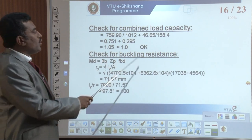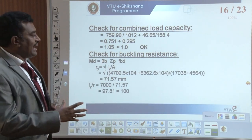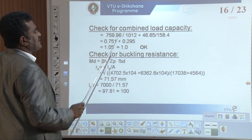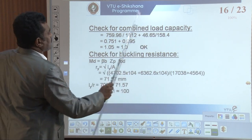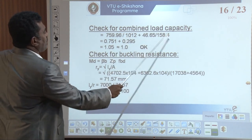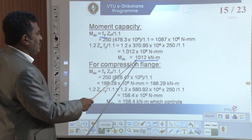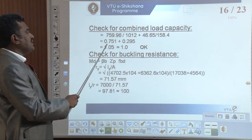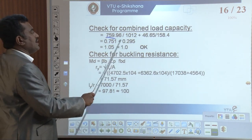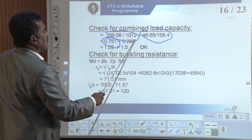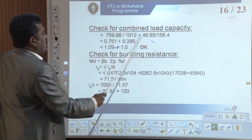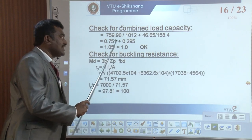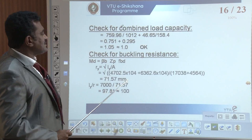Then check for combined loading capacity — for combination of MC and WB. In that: the carrying capacity of shear is 759.96, then 46.65. Here 158.4 is the bending capacity. We get 0.751 plus 0.295, giving a value of approximately 1.05, which is nearly 1. We have taken it as nearly 1; otherwise we can redesign the member. But here, since it is slightly above 1 and we are looking at factored loads, it is okay.